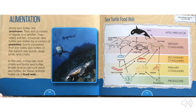Sea turtle food web. The orca is the apex predator. Next are tertiary consumers — examples are the great white shark, large fish, and the sea turtle. Next are secondary consumers — examples are small fish and crustaceans. Below that are primary consumers — examples are sea cucumber, sponge, and jellyfish. Finally, producers — algae and phytoplankton are examples.